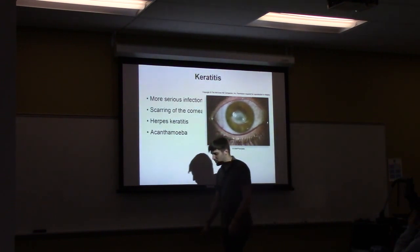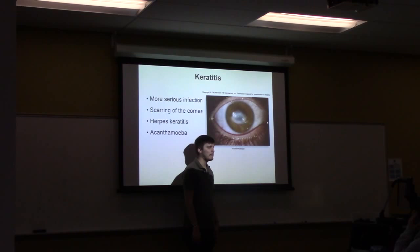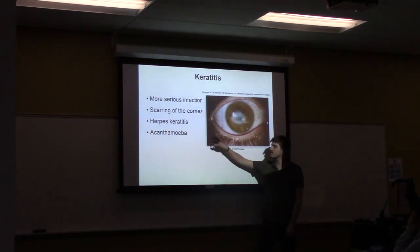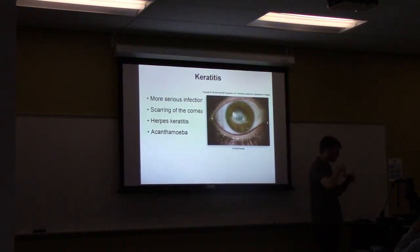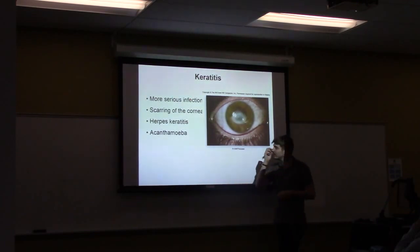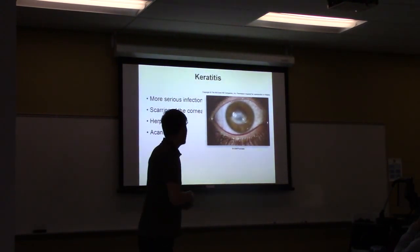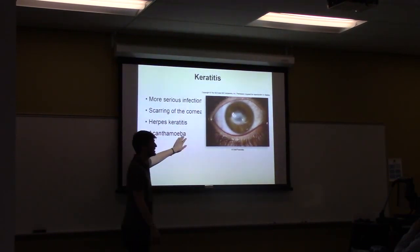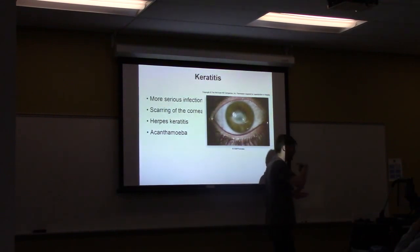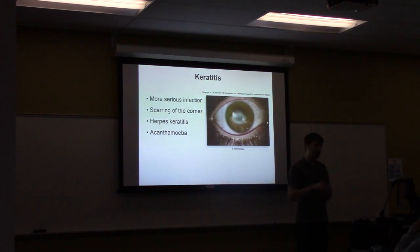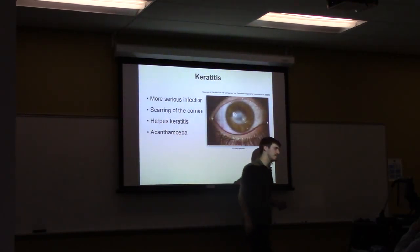Keratitis is inflammation of the cornea, resulting in scarring and potentially blindness. The two main causes are herpes keratitis — a relatively rare herpes infection — and Acanthamoeba, a free-living amoeba found primarily in fresh water that can get into the eye from dirty contact lenses. This is why you must change disposable contacts regularly. There was a case of a girl who wore disposable contacts for a year without changing them and developed Acanthamoeba keratitis. These infections are relatively rare in people who maintain good contact lens hygiene.